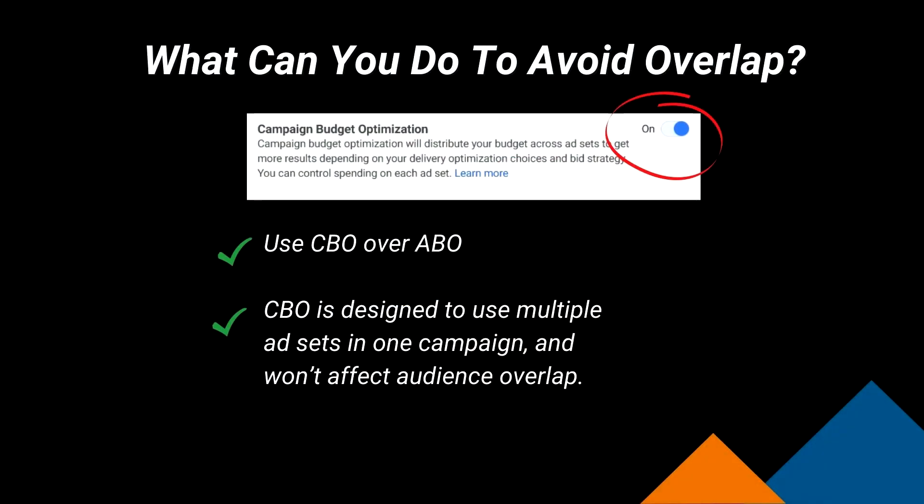The best way to avoid Facebook overlap is to use campaign budget optimization (CBO) campaigns that have ad sets with audiences that have the probability of overlapping, such as retargeting your website visitors and social media visitors. If you were to use separate budgets in ABO campaigns with audiences that could overlap, Facebook can't navigate and stop this from happening — as opposed to CBO campaigns.